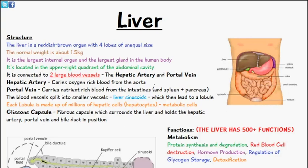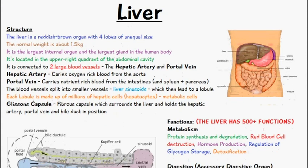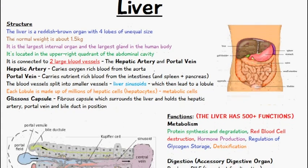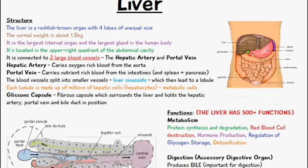The liver is located in the upper right quadrant of the abdominal cavity — you can see it here on the upper right. It's connected to two large blood vessels known as the hepatic artery and the portal vein. The hepatic artery carries oxygen-rich blood from the aorta, and the portal vein carries nutrient-rich blood from the intestines, spleen, and pancreas.